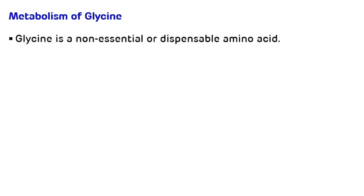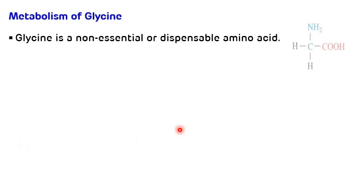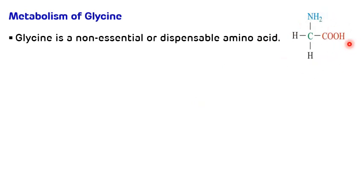Glycine is basically a non-essential and simple amino acid, also called a dispensable amino acid. Looking at its structure, there is a presence of an amino group, a carboxyl group, and in the R group there is a presence of hydrogen — that's why it is a simple amino acid and it is also optically inactive.